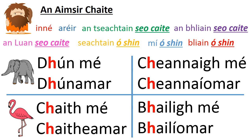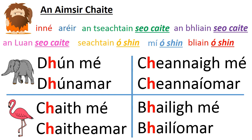So I hope that made sense. An príomhrud le cuimhneamh air — the main thing to remember — caol le caol, leathan le leathan. And one last thing, let's look back at the vocabulary: Inné — yesterday. Arér — last night. An tseachtain seo caite — last week. An bhliain seo caite — last year. An Luan seo caite — last Monday. Seachtain ó shin — a week ago. Mí ó shin — a month ago. Bliain ó shin — a year ago.